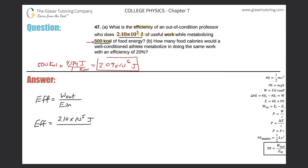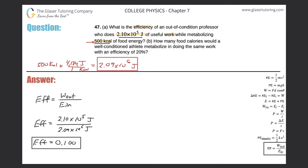So this is the energy put into the system by the professor consuming that food energy. The value on the bottom is 2.09 times 10 to the 6 joules. Note that efficiency can never be over 1, so the numerator has to be equal to or less than the denominator — always a good check. So 2.1 times 10 to the 5 divided by 2.09 times 10 to the 6 gives us about 0.1, which is basically 10%.